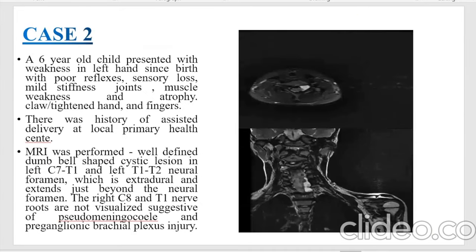The second case was a 6-year-old child presenting with weakness in the left hand since birth, with poor reflexes, sensory loss, mild stiffness, joint muscle weakness, and atrophy. There was a history of assisted delivery. MRI showed a well-defined dumbbell-shaped cystic lesion in left C7 to T1 nerve roots and T1 and T2 neural foramina, which is extradural and extends beyond the neural foramina. The right C8 and T1 nerve roots were not visualized, suggestive of pseudomeningocele and preganglionic brachial plexus injury.